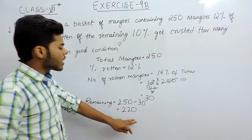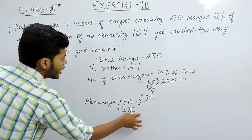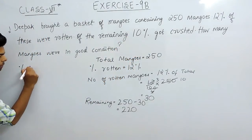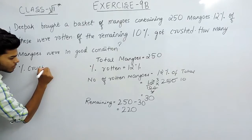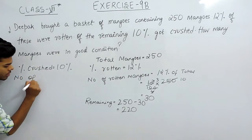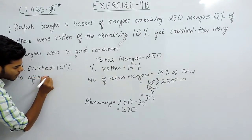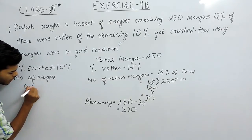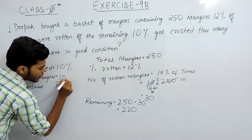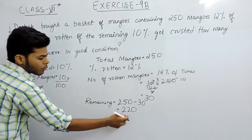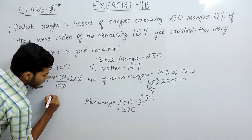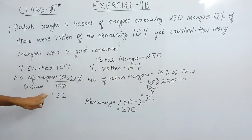So 220 mangoes are remaining. Now, out of these 220, 10% got crushed. Percent crushed equals 10%. Number of mangoes crushed will be equal to 10 divided by 100 multiplied by the remaining 220. That will be equal to 22 mangoes got crushed.